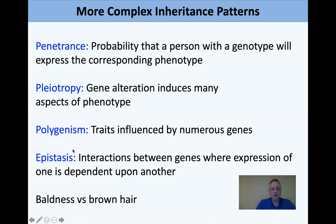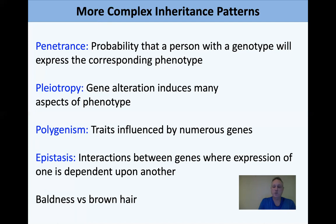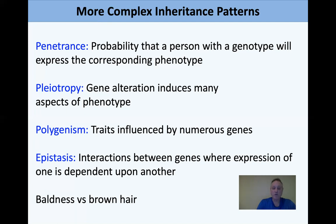Epistasis involves interactions between genes where the expression of one depends on another. A simple example: if you have a baldness gene that prevents hair growth, you'll never express brown hair because hair color depends on whether you can make hair at all. Hair color and hair-making are controlled by different loci.